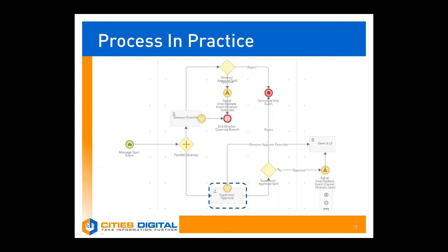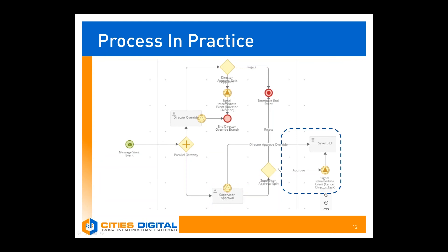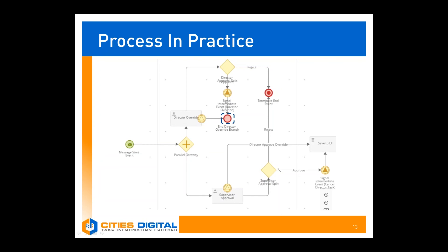The same processes can happen within the supervisor approval branch. Should the supervisor reject, it heads to the terminate end event and the entire form terminates. If they approve, it continues to the signal and then saves to Laserfiche. The signal events in this process only communicate with their corresponding listeners — for example, the 'cancel director task' signal event will interrupt the director approval task, routes it to an endpoint, and that branch ends with the director's task no longer assigned. The same is true for the director override signal, which corresponds to the listener on the supervisor approval task.